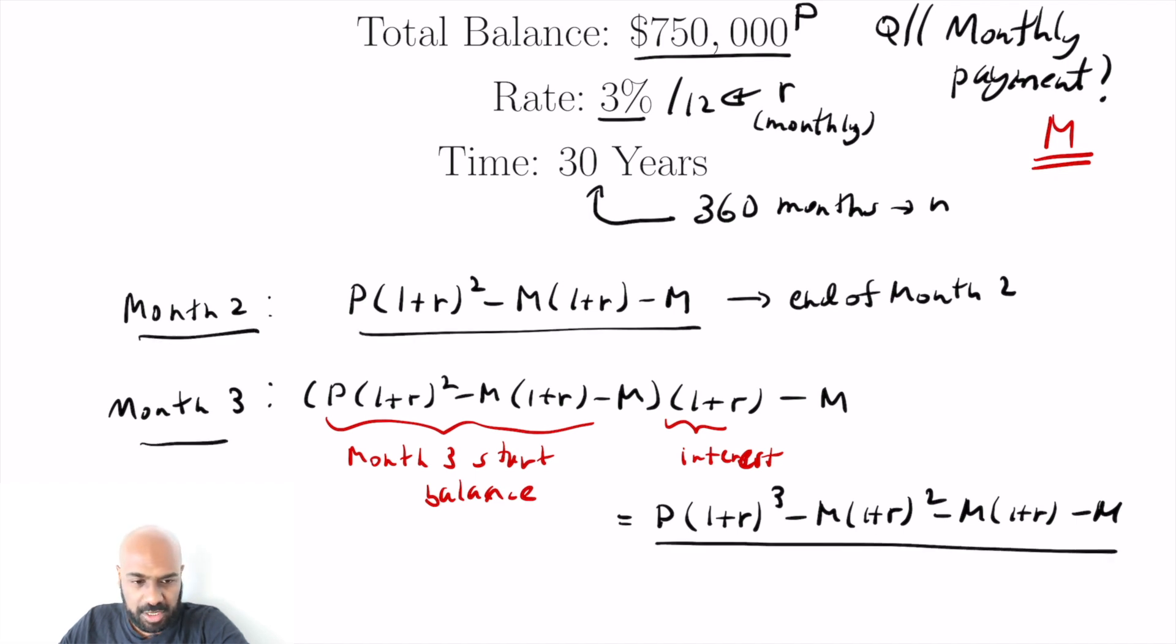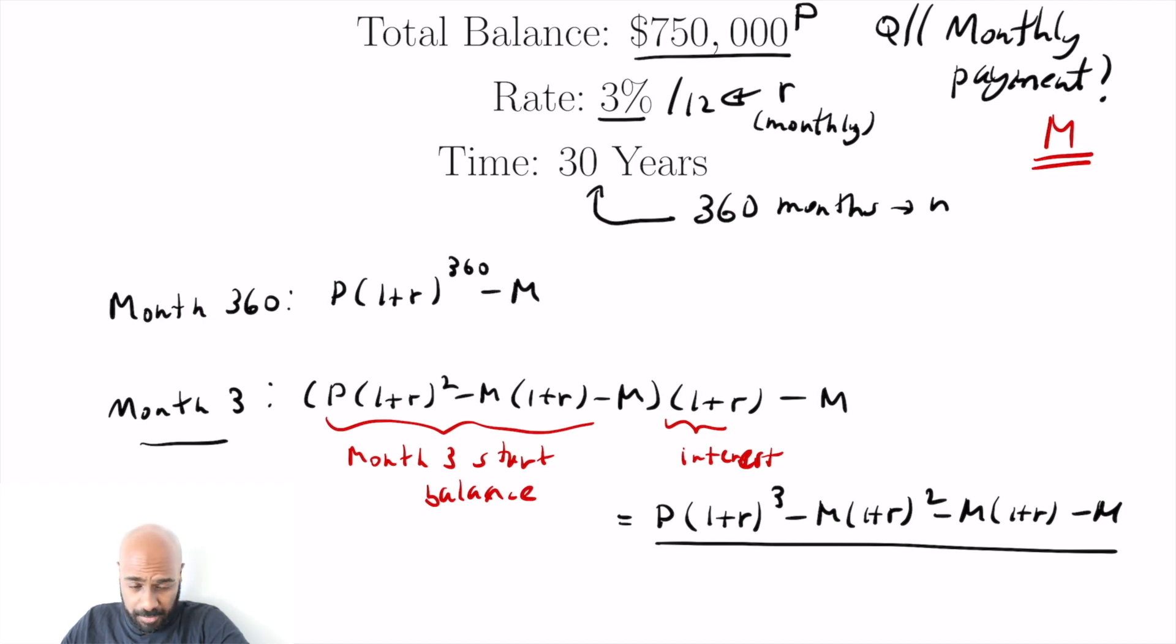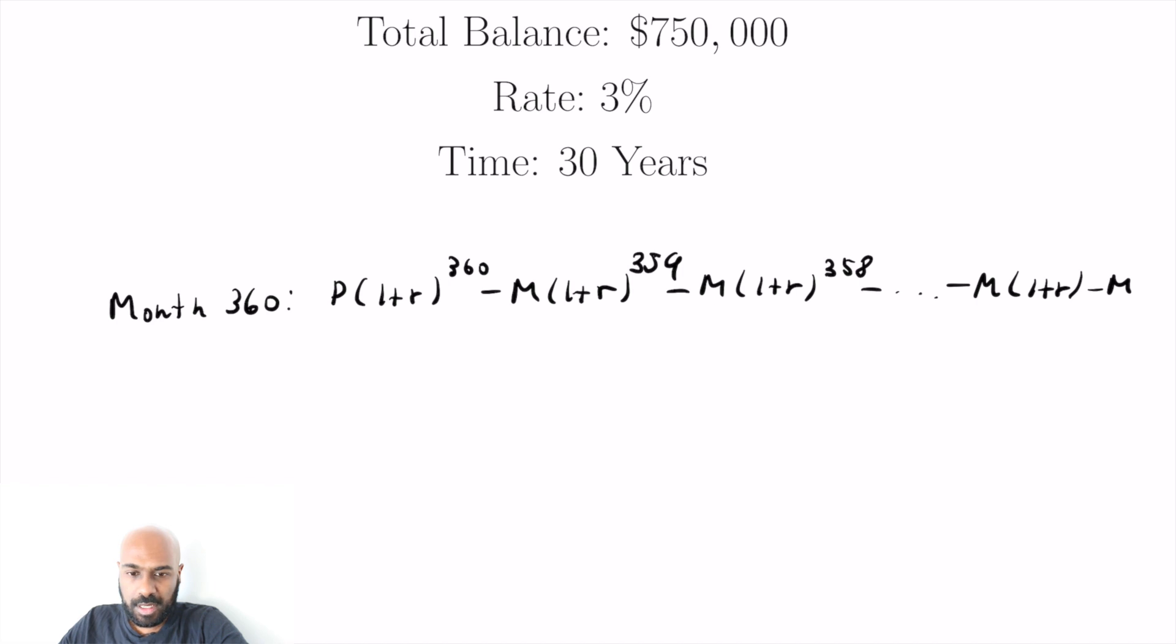So actually we kind of see a pattern. If you look at the expression for month three and month two, you kind of see a general pattern that's happening. And we can figure out what the balance of the mortgage will be at the end of the entire mortgage, which is the 360 month period. So it should be something like one P times one plus R raised to the 360 minus M times one plus R to the 359 minus M times one plus R to the 358, et cetera,